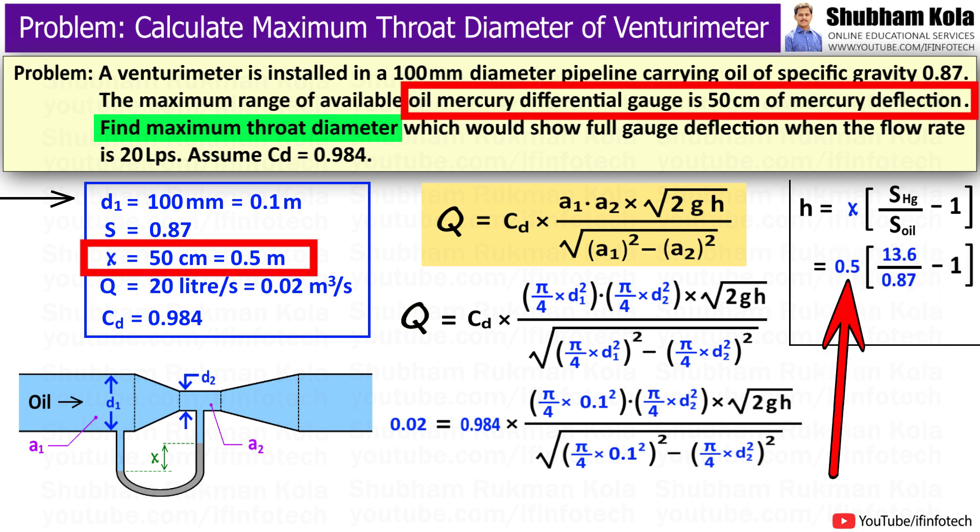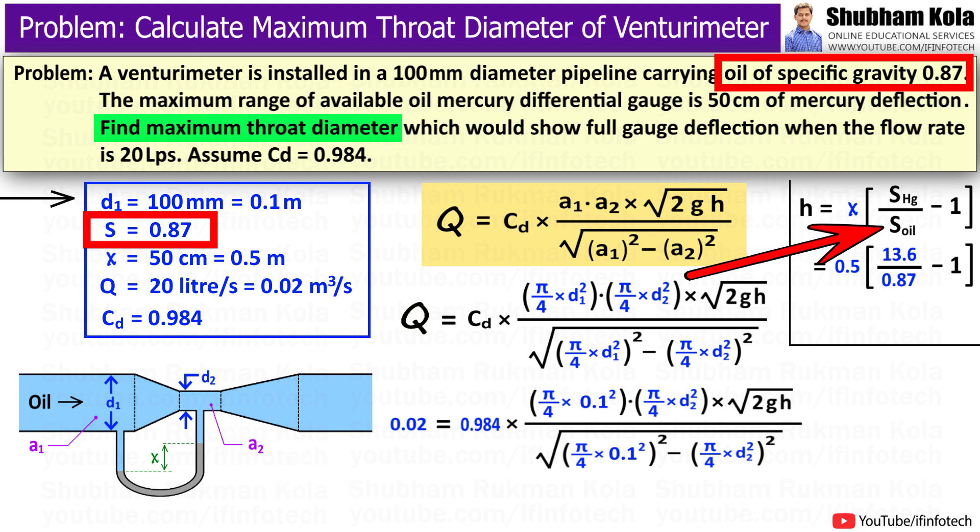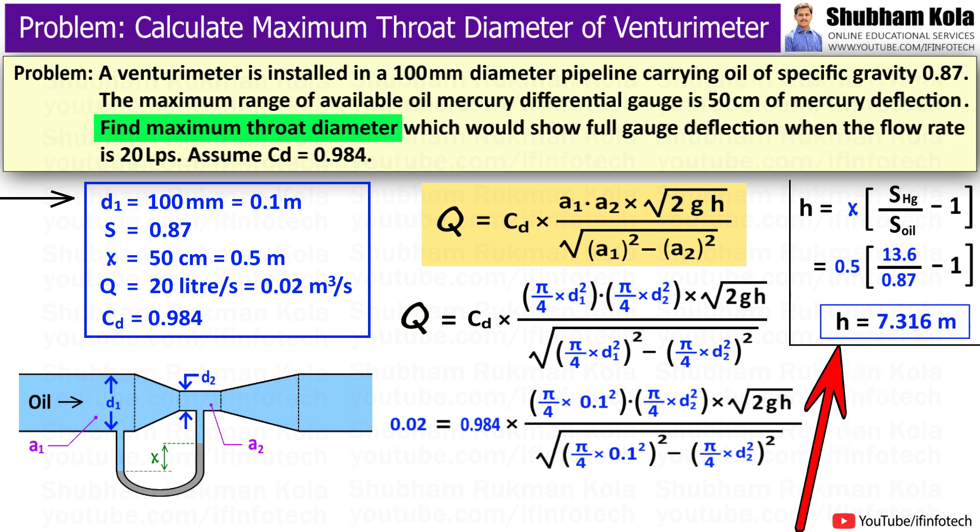Here, small x is given as 0.5m. And here, heavier fluid is mercury so its specific gravity is 13.6. And the value of specific gravity of lighter fluid that is oil which has specific gravity as 0.87. So by using these values, we will calculate small h equal to 7.316 m of oil.